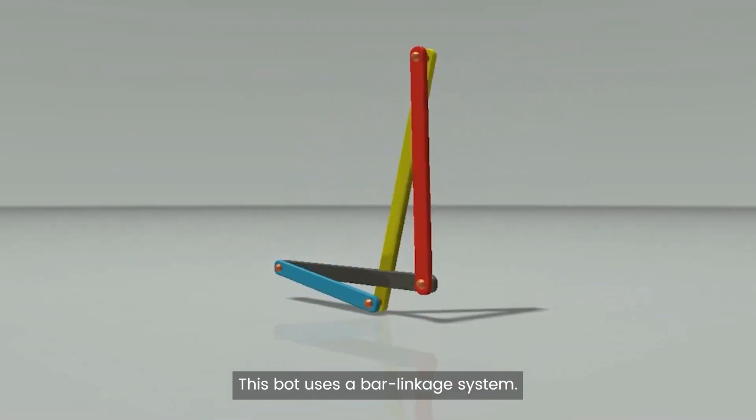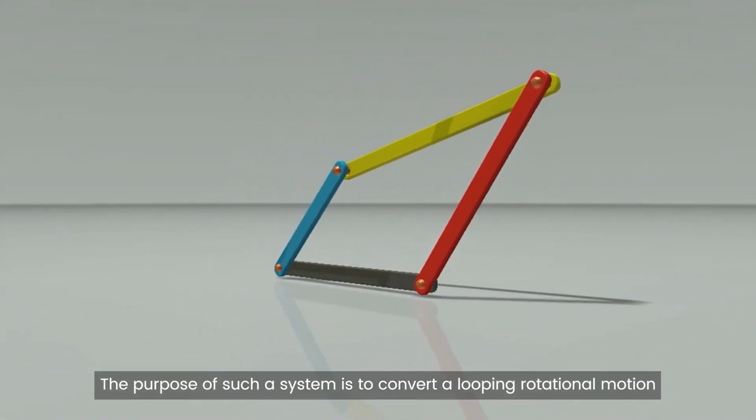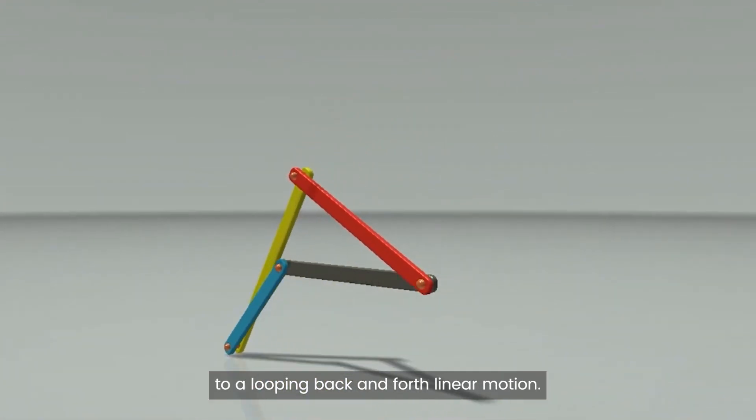This bot uses a bar linkage system. The purpose of such a system is to convert a looping rotational motion to a looping back and forth linear motion.